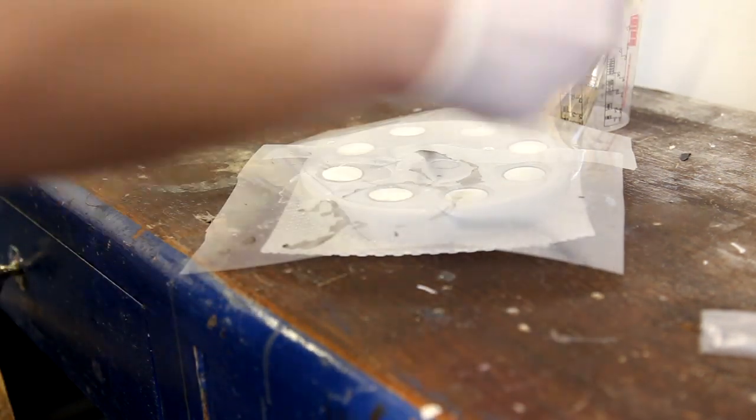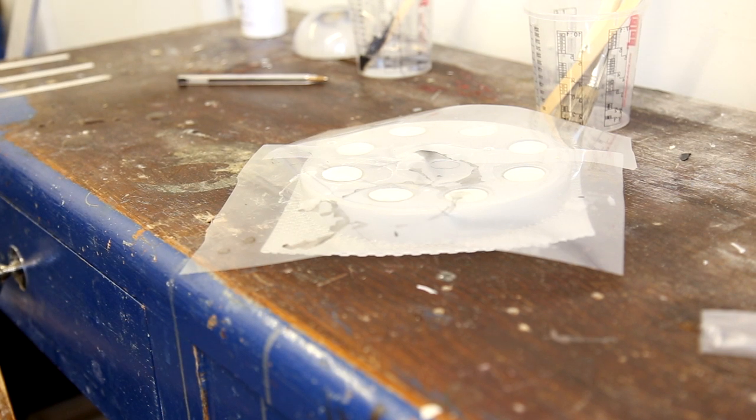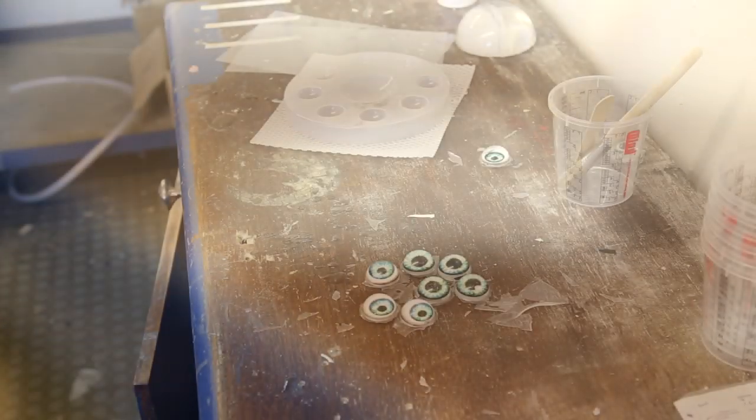So the number one top tip from this video is to use some of this polyester release film. It's really cheap, like a pound or something a meter. And tomorrow, when this is cured, that'll just peel off really easily and it'll leave it completely dry.